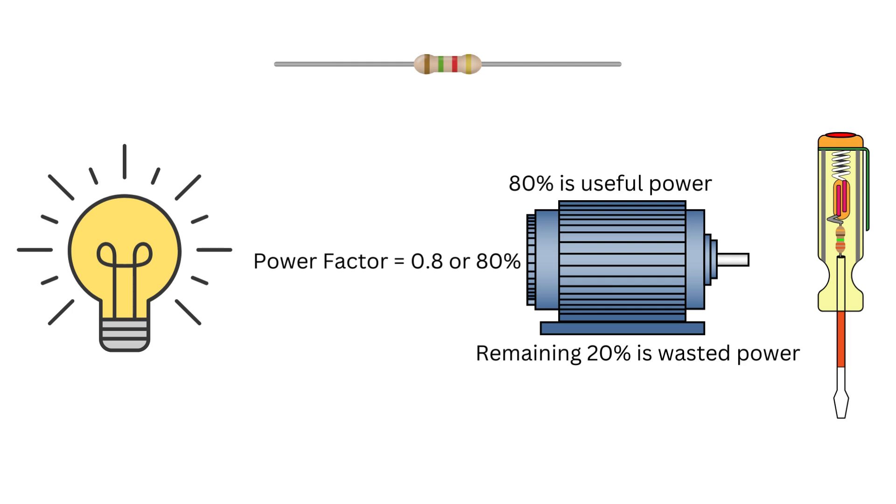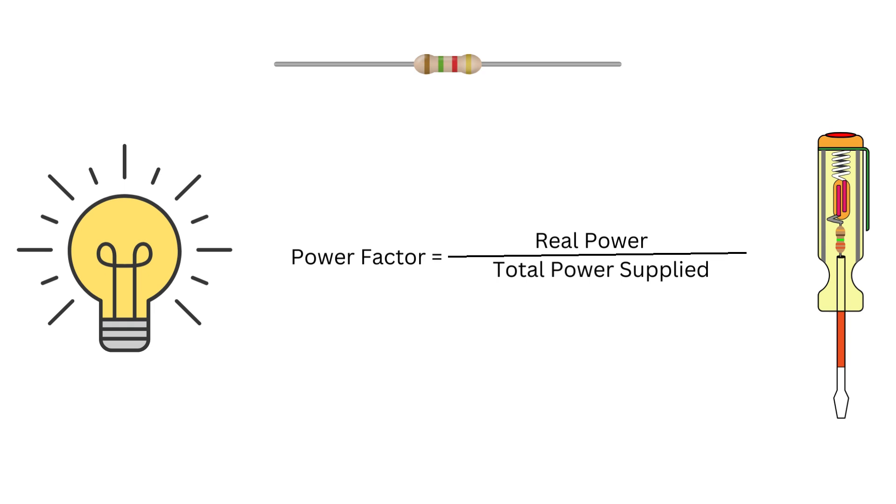Let's make this even clearer with an example. Suppose you have a machine with a power factor of 0.8 or 80 percent. This means that only 80 percent of the power you are paying for is actually used for doing work, while the remaining 20 percent is wasted. In other words, the machine is not as efficient as it could be.